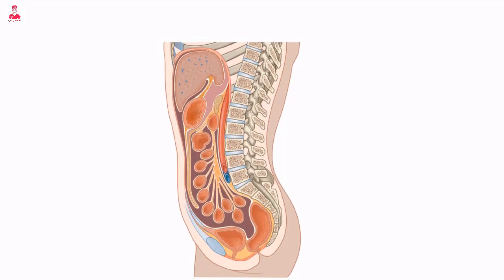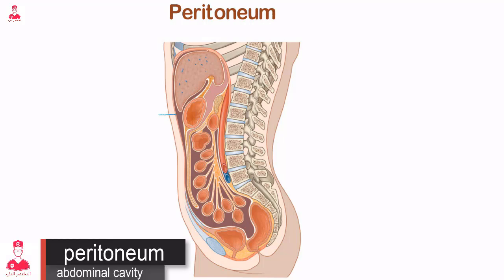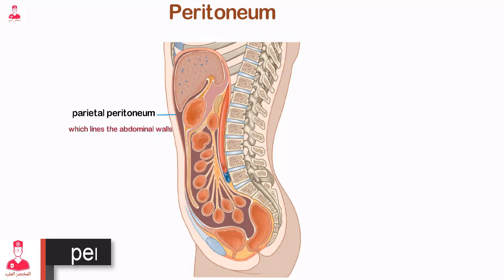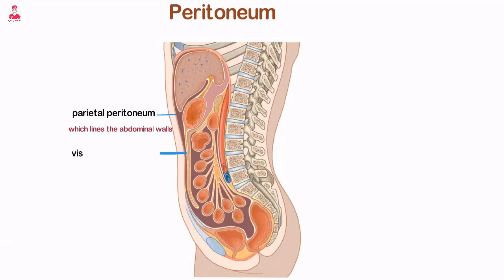The walls of the abdominal cavity are lined by a thin serous membrane called the peritoneum. This membrane is divided into two layers: the parietal peritoneum, which lines the abdominal walls, and the visceral peritoneum, which covers the organs. The two layers of peritoneum are separated by a thin film of serous fluid for lubrication that allows organs to move against each other without friction.